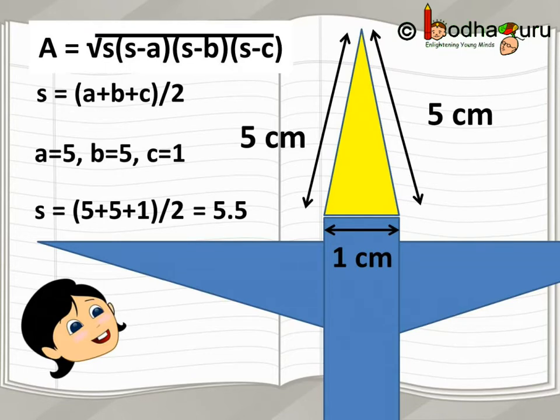So, half of 5 plus 5 plus 1 which is equal to 11 by 2, and thus we get s equal to 5.5 cm.